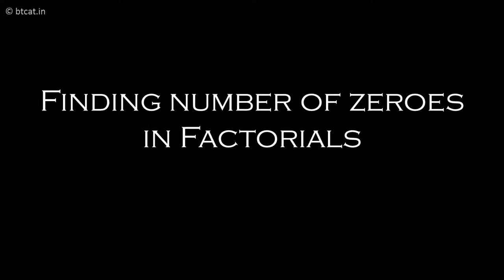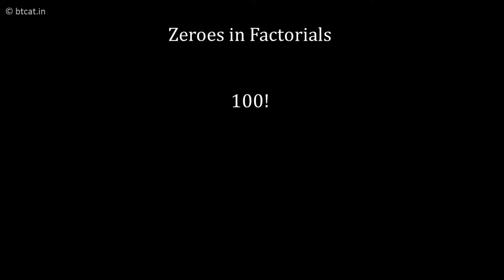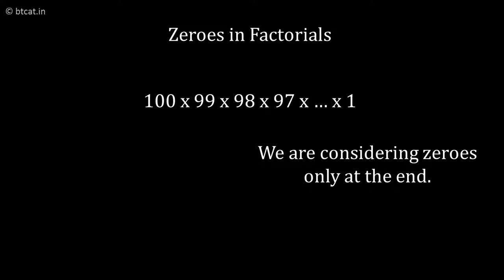Let us look at how to find the number of zeros in any factorial, say 100 factorial. So what is 100 factorial? 100 into 99 into 98 into 97 dot dot till 1. I want to find how many zeros will be there in the last. When we say zeros, we always mean in the end.